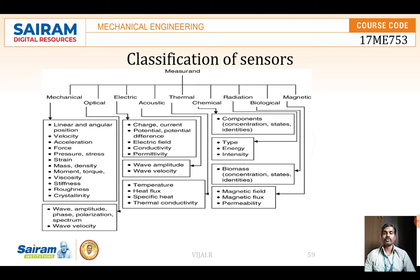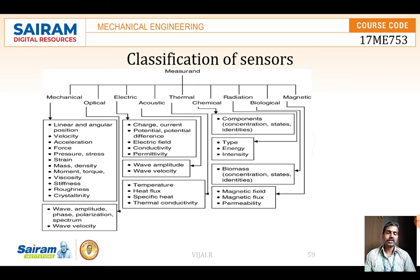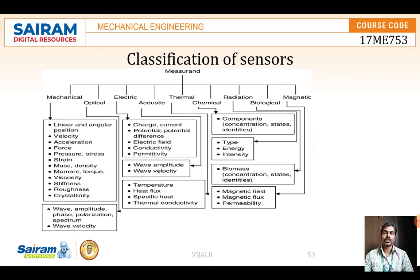Optical sensors are used for measuring polarization, spectrum, wavelength, and wave velocities. Electrical sensors are used for checking electrical conductivity, permittivity, change in potentials, and potential difference — like ammeters and voltmeters — to check electrical changes. Thermal sensors are used to find heat flux, temperature conductivity of a product or material, and temperature differences.